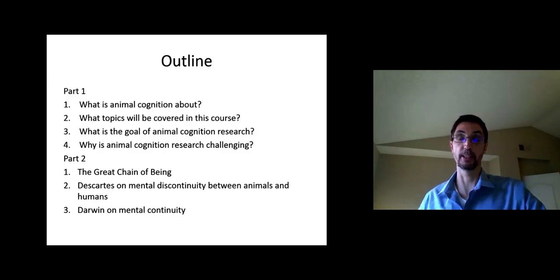And then in the last part of the lecture we're going to be discussing Darwin's ideas on mental continuity. His idea is that evolution by natural selection leads you to expect that there should be similarities between humans and animals in terms of their mental lives.